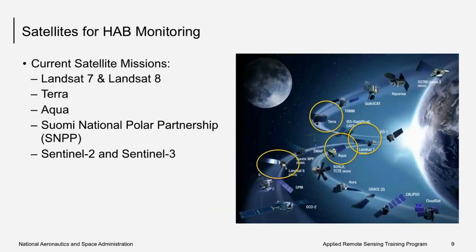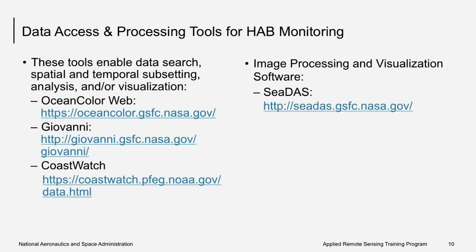In week two, Dr. Amita Mehta talked about satellites that are useful for HAB monitoring, including Landsat 7 and 8, Terra and Aqua with the MODIS sensor, the Suomi National Polar Partnership's VIIRS sensor, and the imagers aboard the Sentinel-2 and Sentinel-3 satellites. Also in week two, Amita provided information on data access and processing tools for HAB monitoring, including links to data portals such as OceanColorWeb, Giovanni, and NOAA's CoastWatch. She also mentioned the image processing software CDAS, which is freely available from NASA's Ocean Biology Processing Group. You can find tutorials on how to use CDAS at the website.